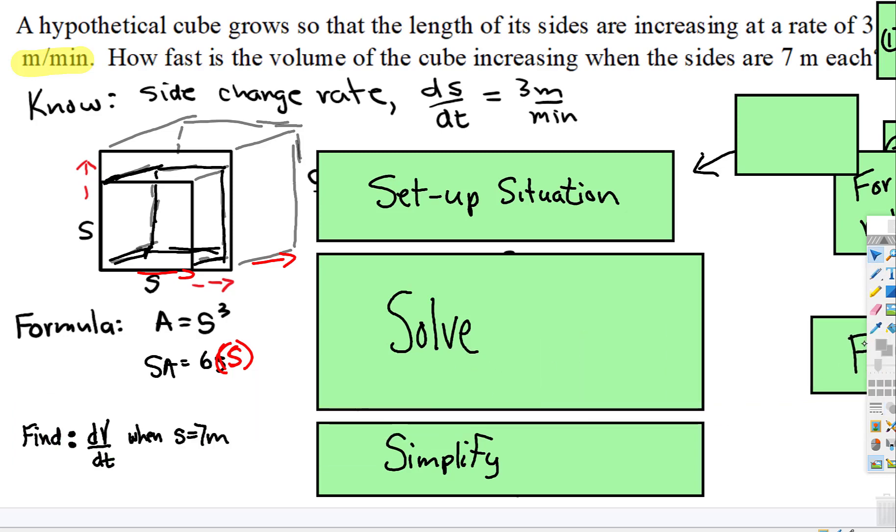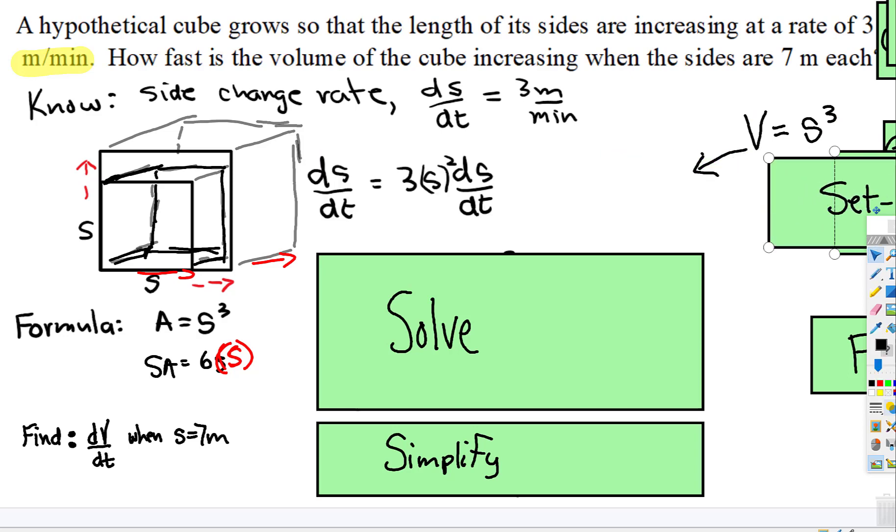And then we need to find dV/dt at the exact moment when the side length is seven meters. So we start with the volume formula. Volume equals sides cubed. So when we take the derivative of this, we're going to get 3s² ds/dt, which is what we have right there.